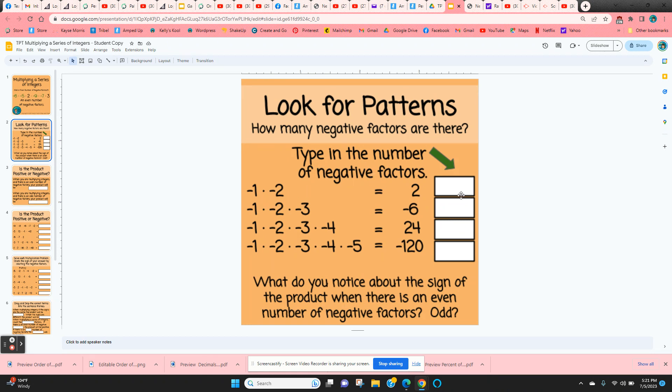In the first row there's two negative factors so they type in a 2, then three negative factors, four negative factors, and five negative factors. You want them to look this over and see if they can see any kind of pattern.